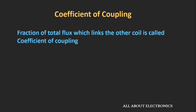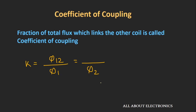Let's say φ1 is the total flux generated due to current in coil 1, and φ12 is the flux linked to coil 2. Then the ratio φ12/φ1 is the coefficient of coupling. Similarly, if φ2 is the total flux generated due to current in coil 2, and φ21 is the flux linked to coil 1, then the ratio φ21/φ2 is also known as the coefficient of coupling.